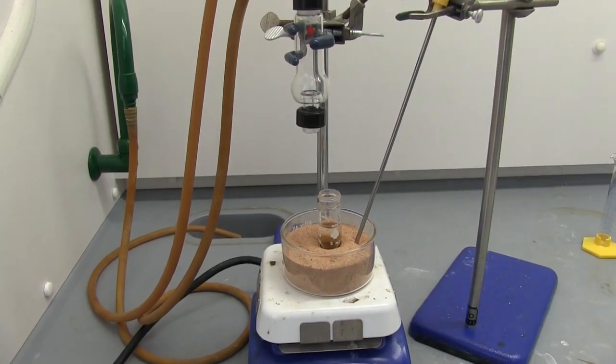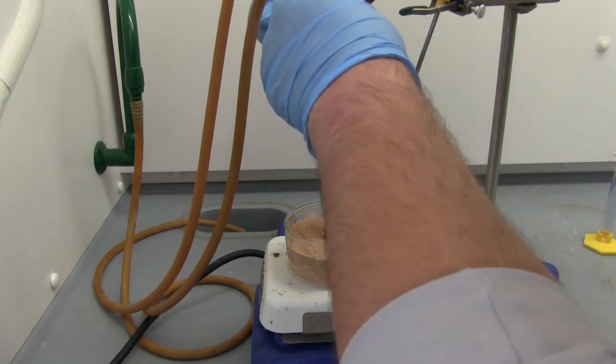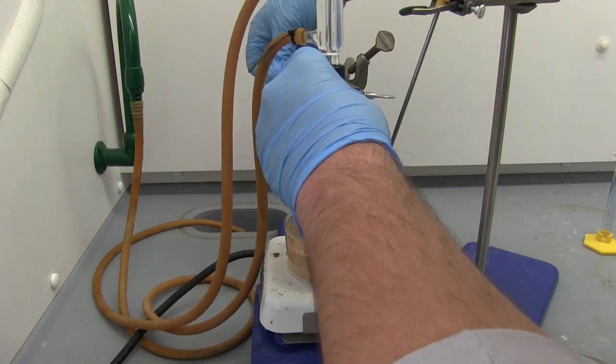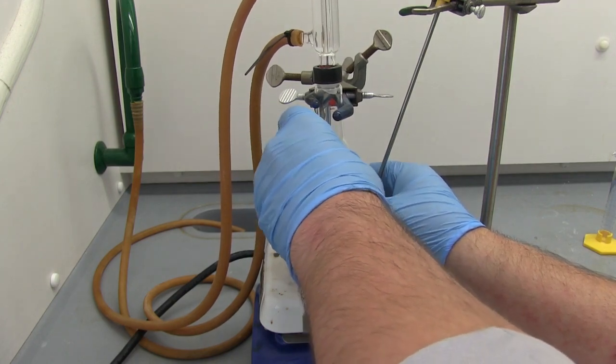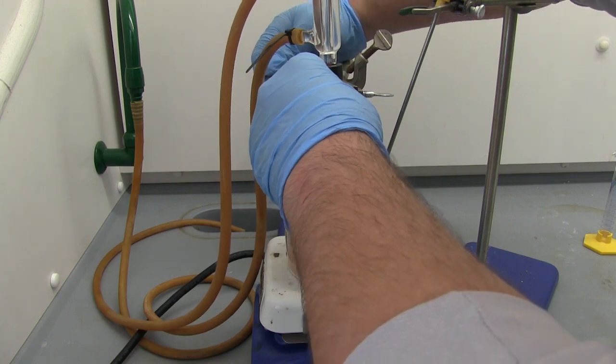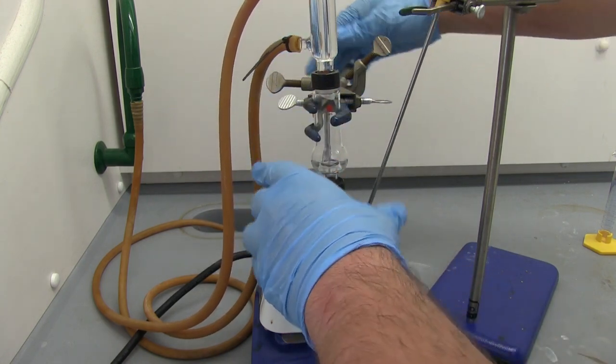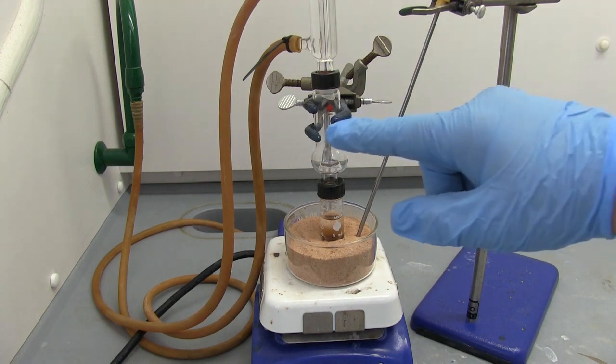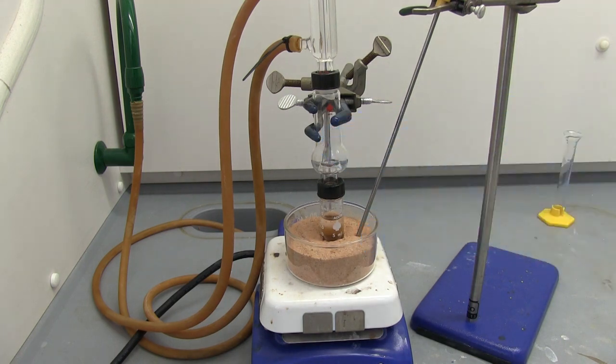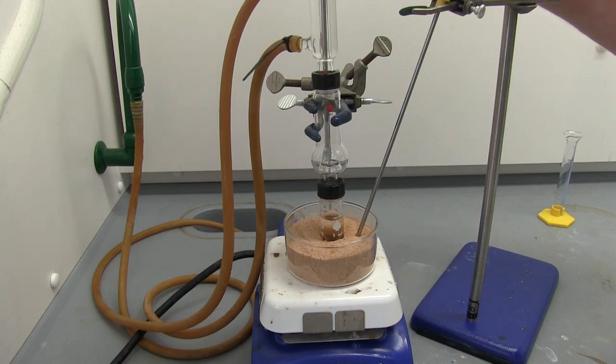Now that we have all our reagents in here, we're going to lower our distillation setup and get it all connected. Now you just screw in to secure it, and get it into the sand bath and connect up our thermometer. And we want our thermometer to hang out in here, the bulb tip of it, so that we're catching the temperature of the distillate, or the vapor as it comes out. So about there.